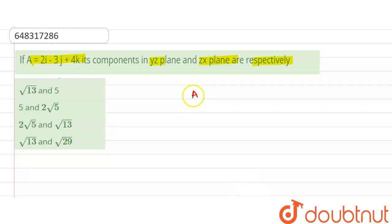First we will write the given vector A is equal to 2i minus 3j plus 4k. So here, x component of A is 2, y component is minus 3, and z component of A is 4. So for y-z plane,